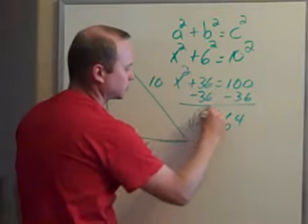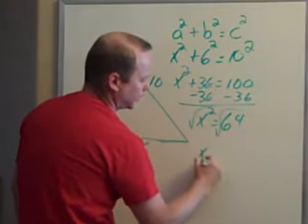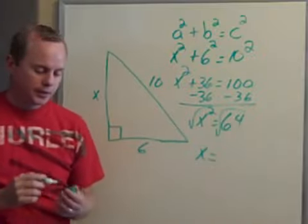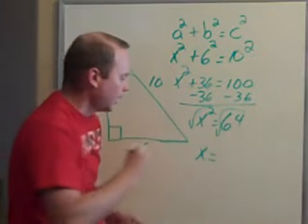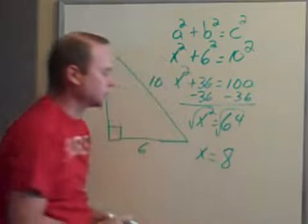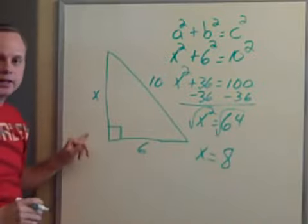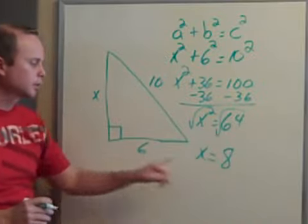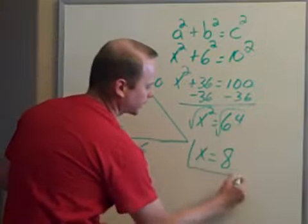If x squared gives me 64, I can take the square root of both sides. x equals, now in math, x would equal plus or minus 8. However, in this one it just equals 8 because we're dealing with the distance of a side, the length of a side. So distance is always positive. So your answer in this case is simply x equals 8.